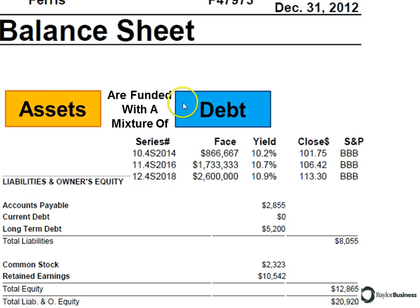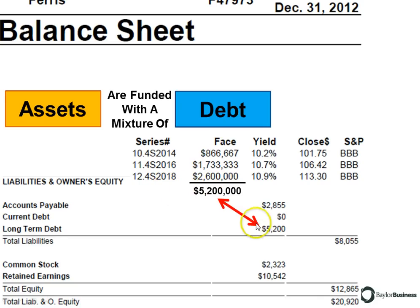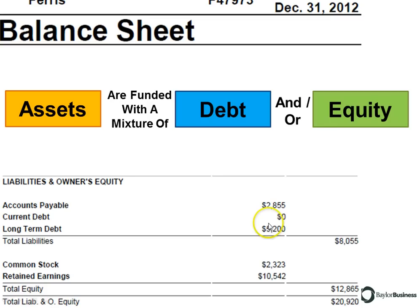If we go to page two of the fast track, we'll find that this company has three bonds — every company begins Foundation with three bonds. The first one is due in two years, the second in four years, and the third in six years. If we add up the face value of these bonds — their size, due dates, and interest rates — we get 5.2 million in bonds, and they have 5.2 million in long-term debt. So they funded a lot of it with debt and some with equity.